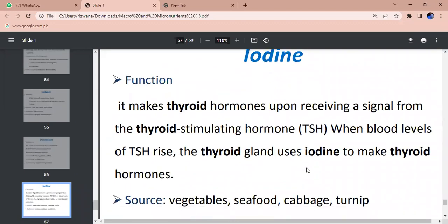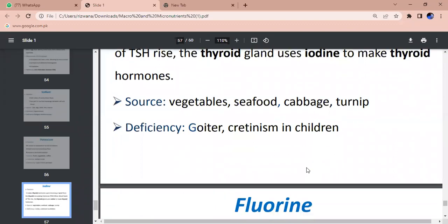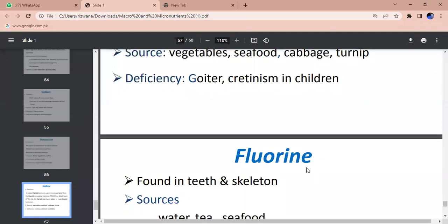Iodine - constituent of thyroid hormone. Receiving signal from thyroid stimulating hormone. When blood levels of TSH rise, thyroid gland uses iodine to make thyroid hormone. Sources - vegetables, seafood, iodized salt. Deficiency - goiter, cretinism in children with dwarfism.